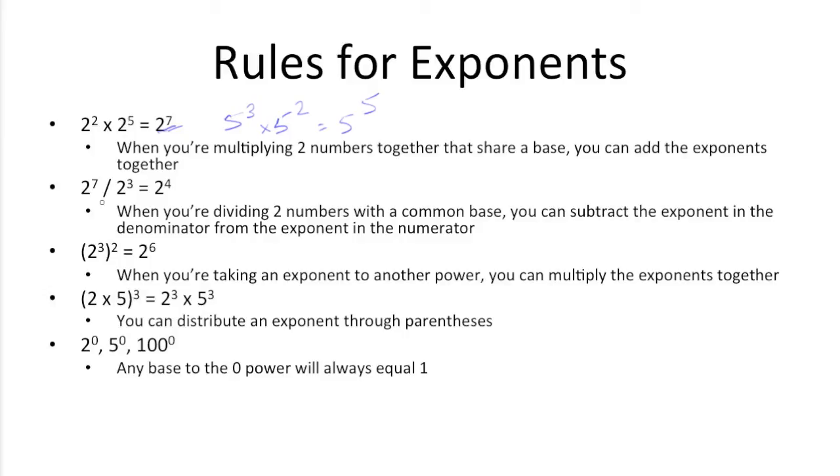Here you have a similar situation except you're dividing. You have the same base, 2. All you need to do is subtract the exponents from each other, which is why you get 2 to the fourth power, right? 7 minus 3 is 4.